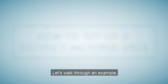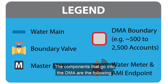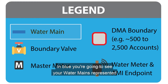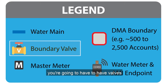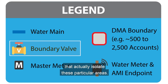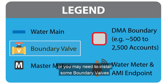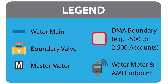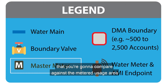Let's walk through an example. The image on the screen represents a part of your service territory where you want to set up district metered areas. The components that go into the DMA are the following: in blue, you'll see your water mains represented flowing through this service territory. To establish a DMA, you need valves that isolate particular areas — you may have valves currently you can use, or you may need to install some boundary valves. You're also going to install master meters that measure the inflow into these areas, which you'll then compare against the metered usage for that particular DMA.